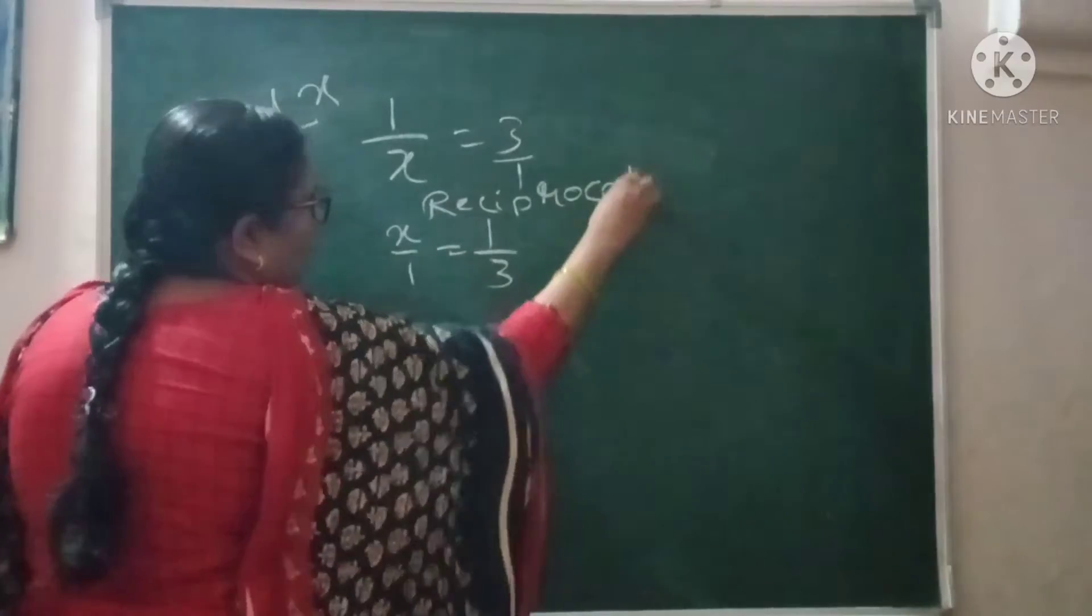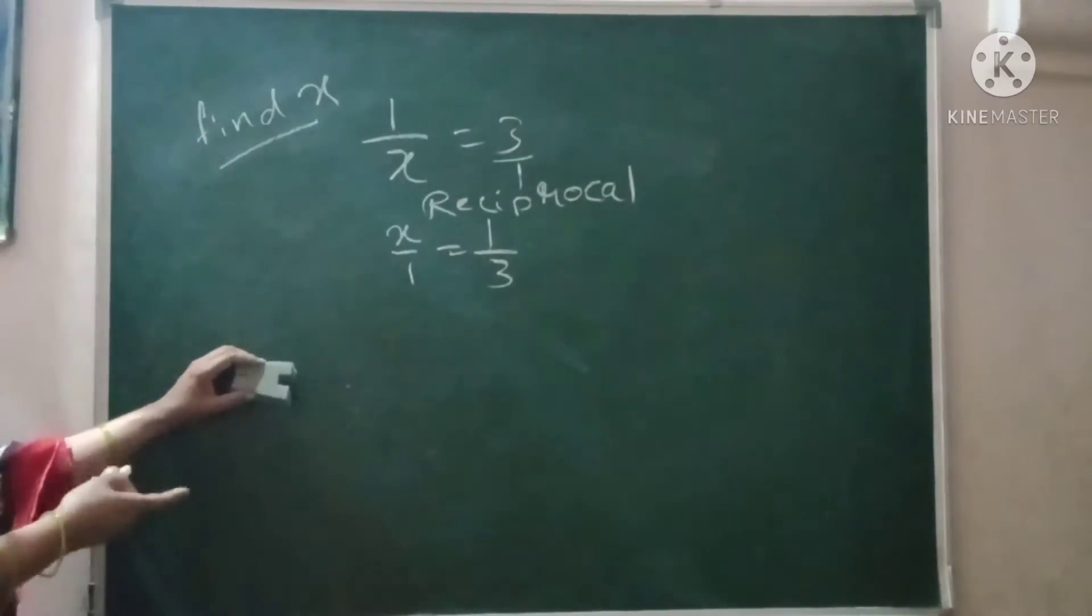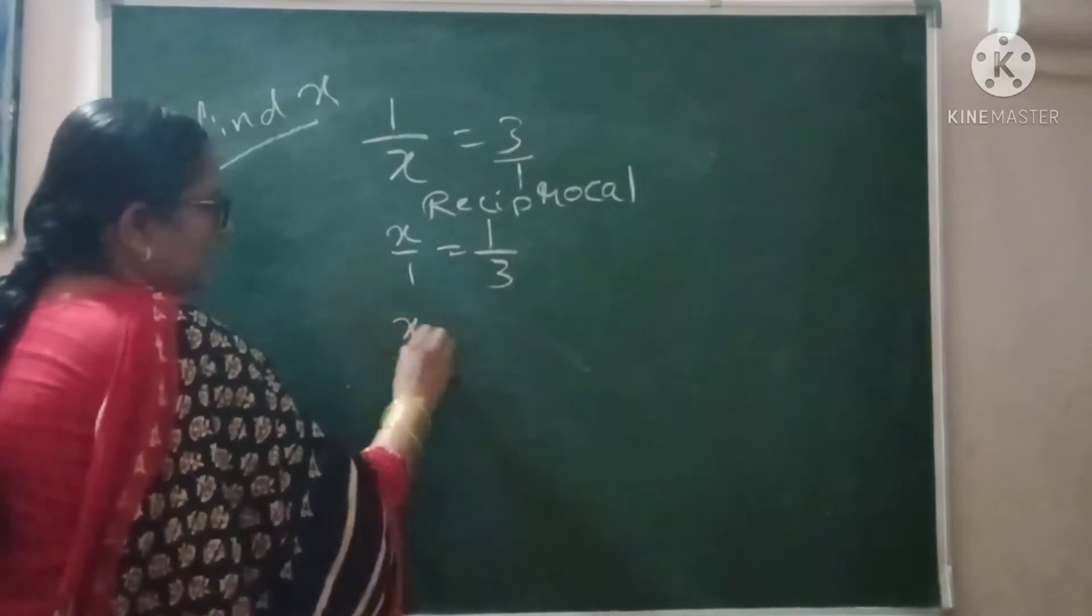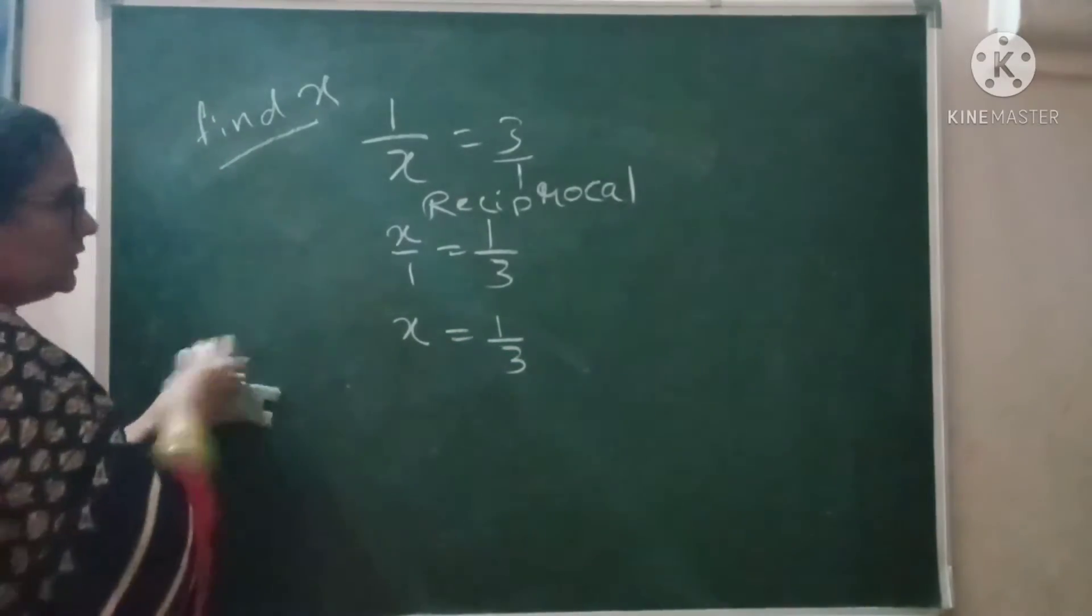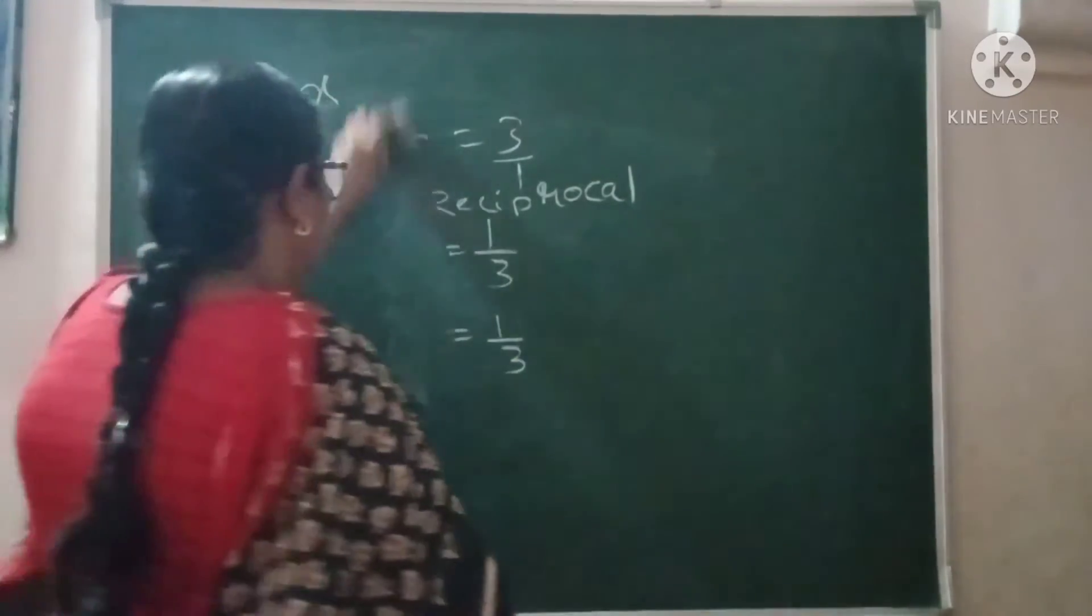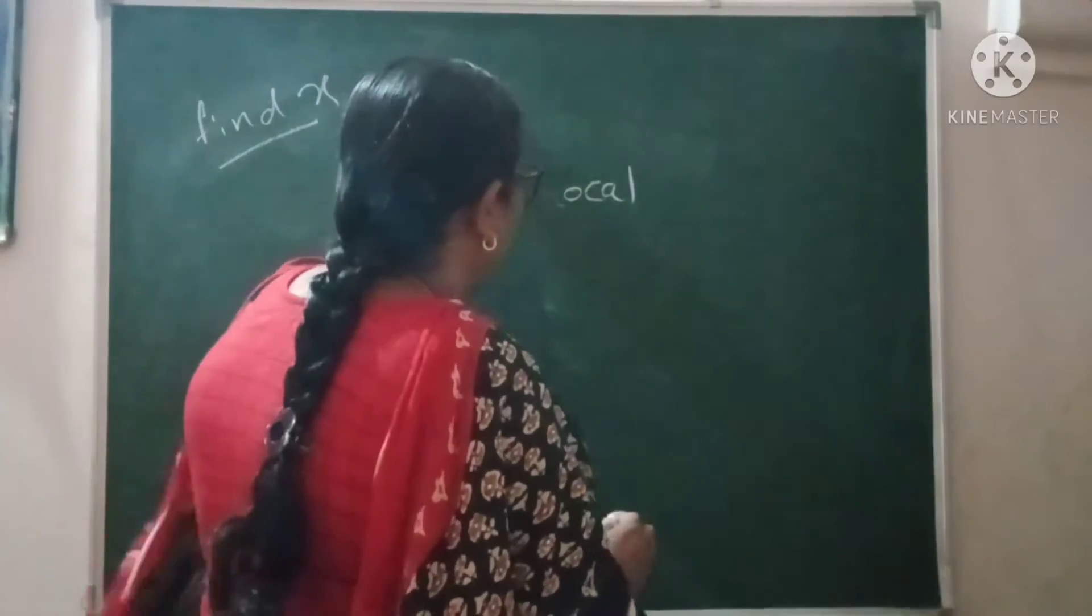Making numerator denominator, denominator numerator. Then what will you get? x upon 1 means, just now I explained, it is x is equal to 1 upon 3. This way you can solve the confusions wherever you face.